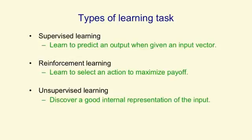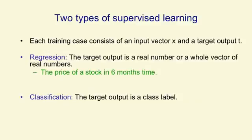Supervised learning itself comes in two different flavours. In regression, the target output is a real number or a whole vector of real numbers, such as the price of a stock in six months' time or the temperature at noon tomorrow. And the aim is to get as close as you can to the correct real number.